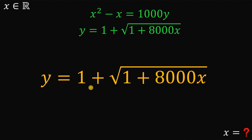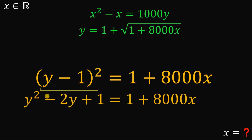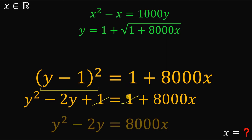Focusing on the equation y equals 1 plus the square root of 1 plus 8,000x, we subtract 1 from both sides, then square both sides to eliminate the square root. This gives us y minus 1 raised to the power of 2 equals 1 plus 8,000x. Expanding the left side gives y squared minus 2y plus 1. Subtracting 1 from both sides, we get y squared minus 2y equals 8,000x.